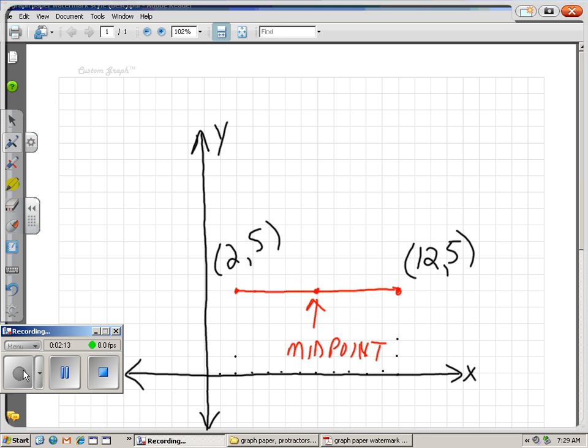Well, visually, it's easy to see. If we count over to the midpoint, we would have to go 1, 2, 3, 4, 5, 6, 7 to the right. And 1, 2, 3, 4, 5 up. So it's easy to see that visually the 7 is halfway between my 2 and my 12.